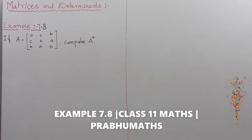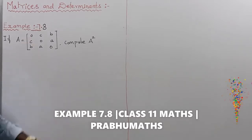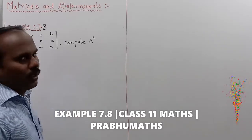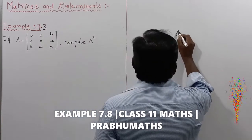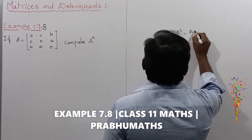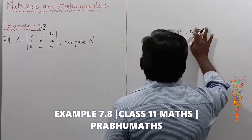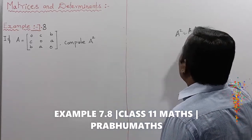Example 7.8: If A is equal to a 3×3 matrix, compute A squared. So A squared is equal to A into A.